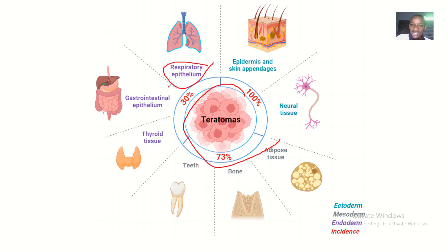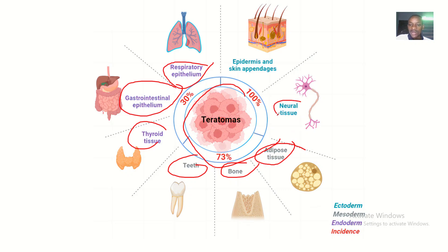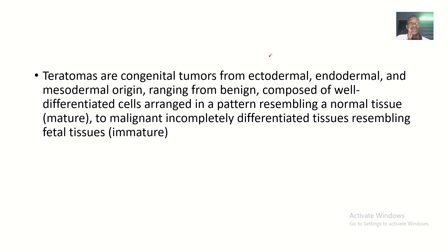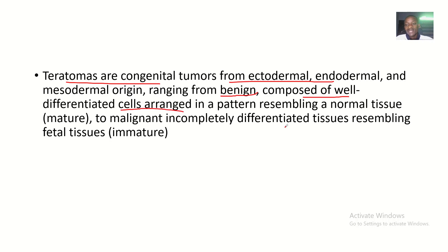Teratomas can occur in any system of the body — be it respiratory epithelium, gastrointestinal epithelium, thyroid tissues, the breasts, the bones, adipose tissue, neural tissue, or the epidermis and skin appendages. So teratomas are congenital tumors from ectodermal, endodermal, and mesodermal origins. They range from being benign — composed of well-differentiated cells arranged in a pattern resembling normal tissue — meaning benign cells still look like the cells that used to be there.